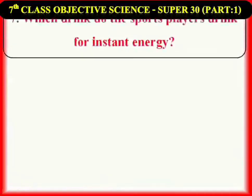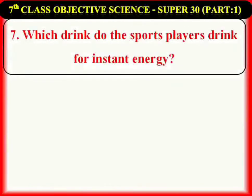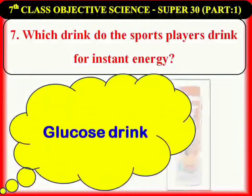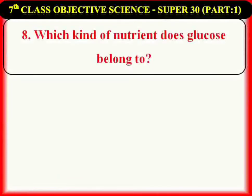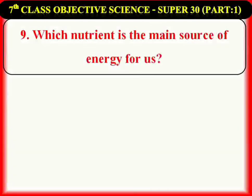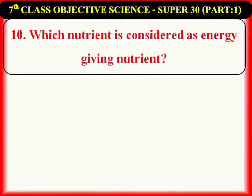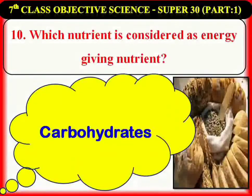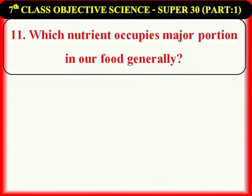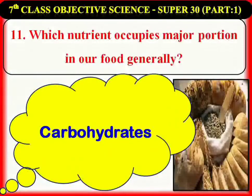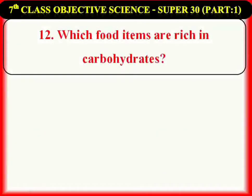Which drink do sports players drink for instant energy? Glucose drink. Which kind of nutrient does glucose belong to? Carbohydrates. Which nutrient is the main source of energy for us? Carbohydrates. Which nutrient is considered as the energy-giving nutrient? Carbohydrates.